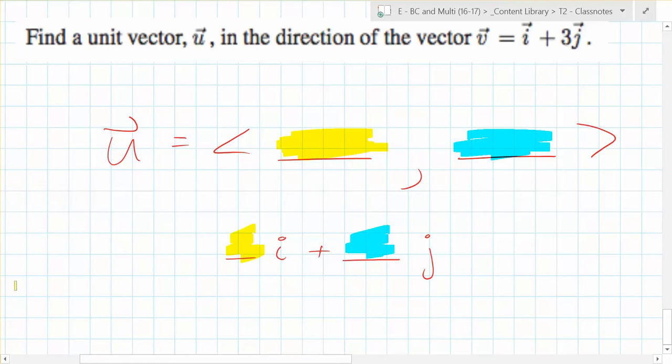Okay, so first of all, what did I say? In order to get a unit vector, you need to divide by the magnitude. Does this have a magnitude of one? What is the magnitude of that?